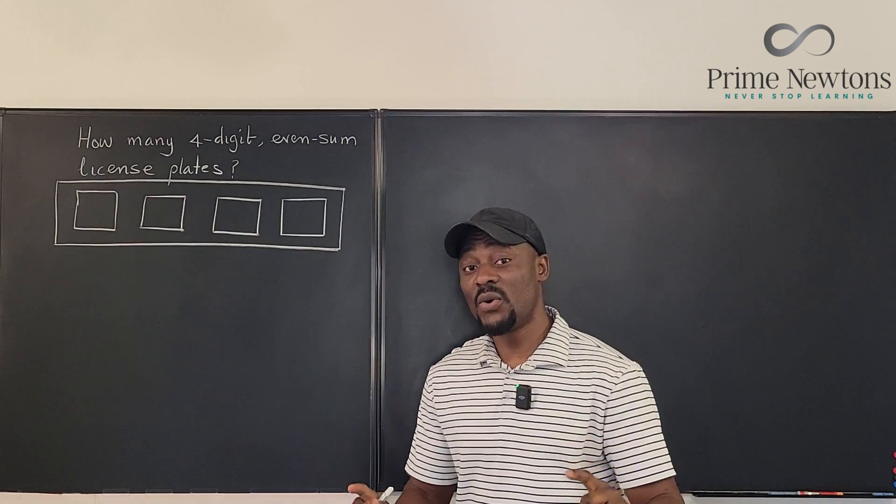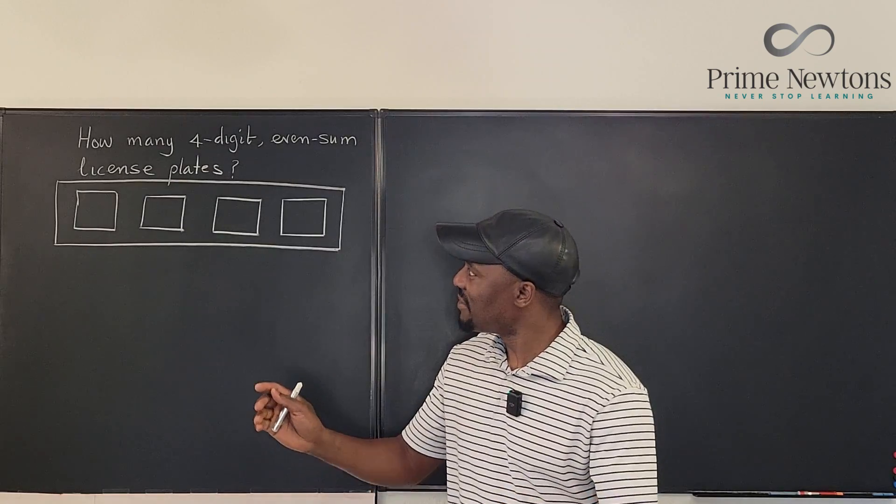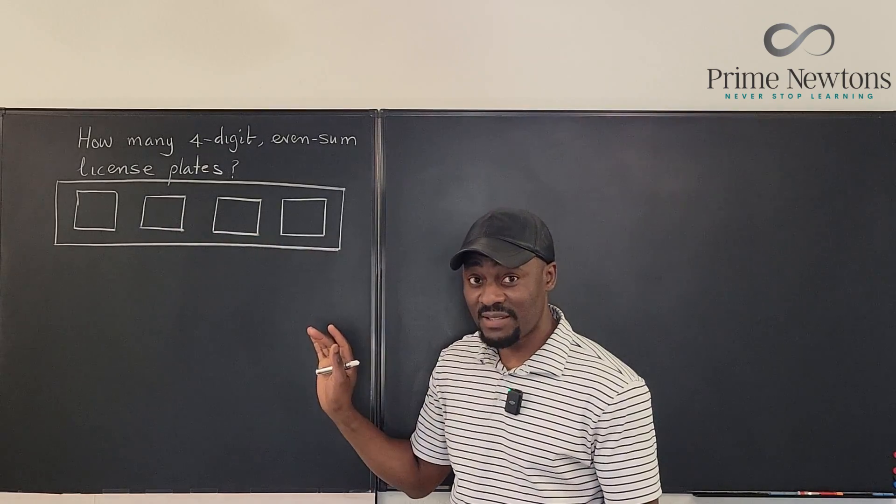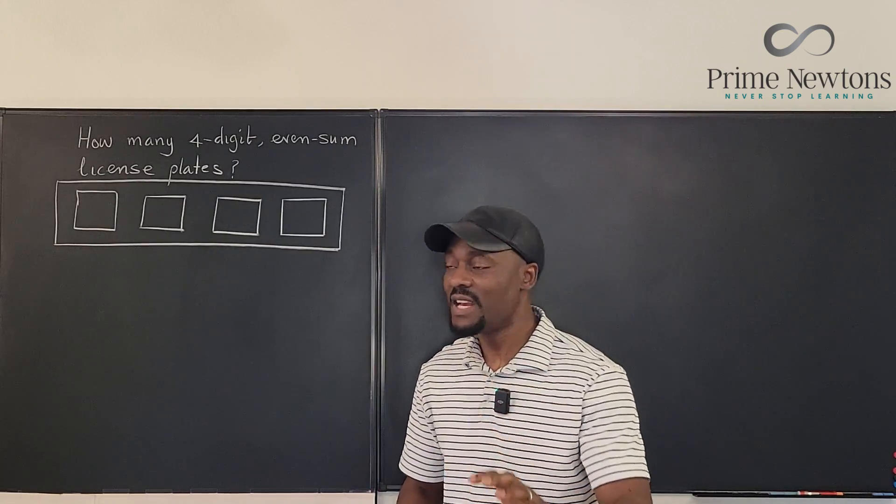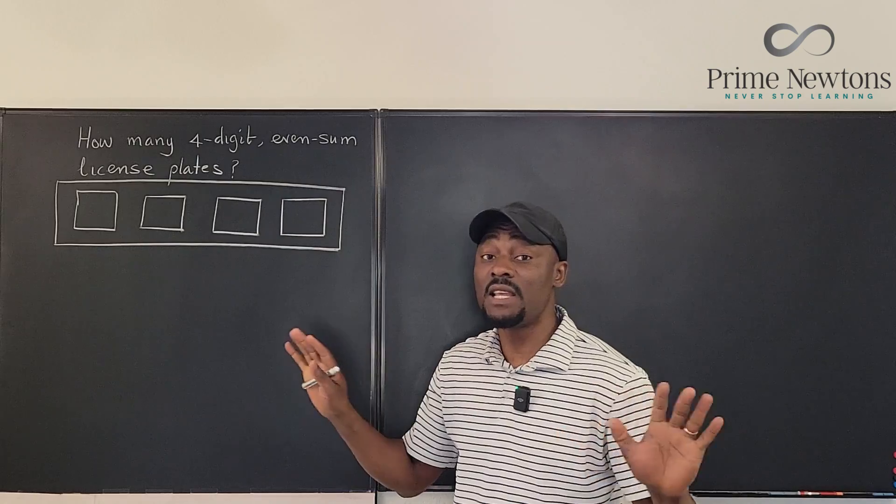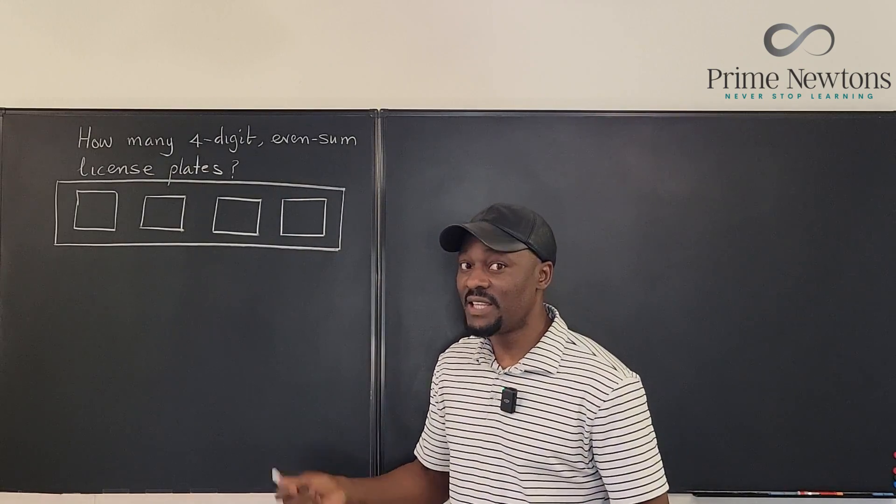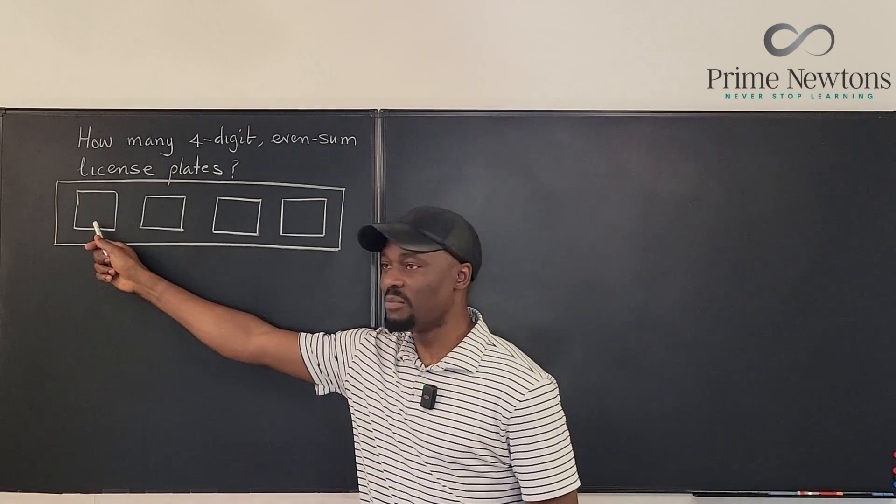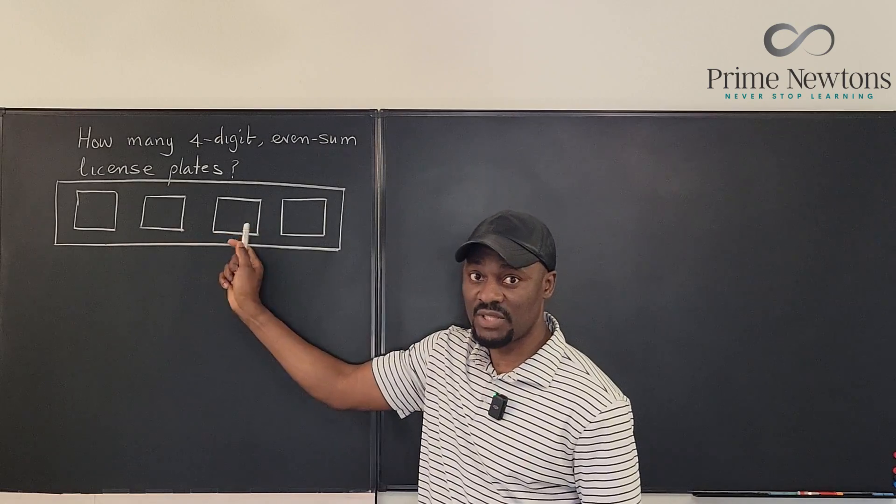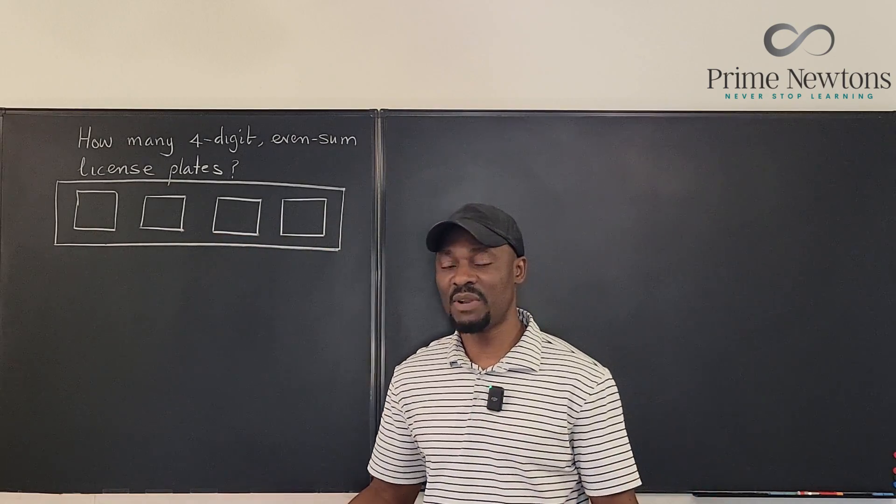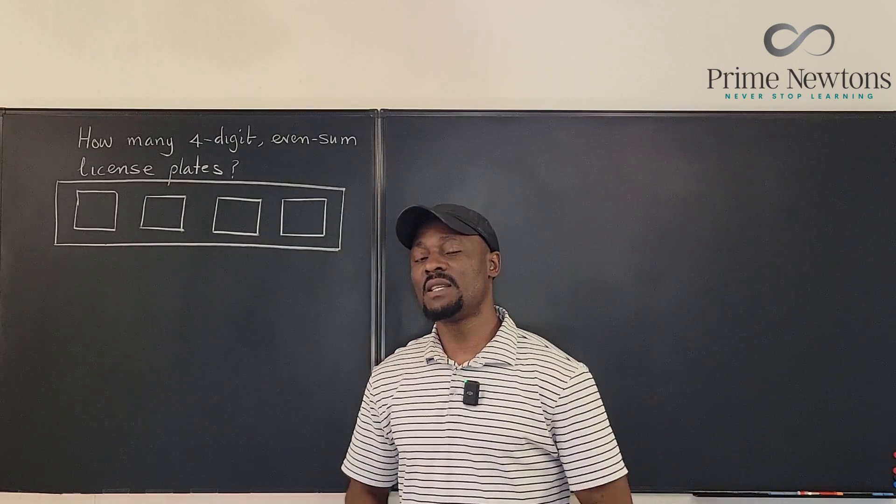Method number one is what I call just intuitive reasoning. We have this license plate system using the digits 0, 1, 2, 3, 4, 5, 6, 7, 8, 9, so there are 10 digits. Without any conditions or restrictions, you're going to have 10,000 license plates because you have 10 times 10 times 10 times 10. So without restrictions you have a maximum of 10,000 license plates.